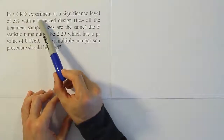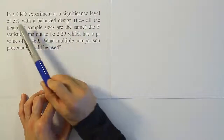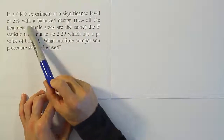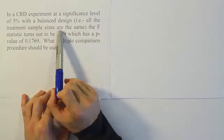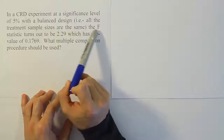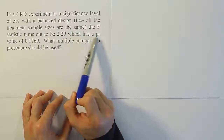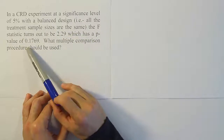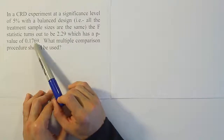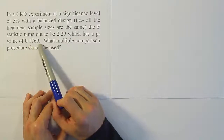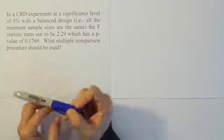In a completely randomized design experiment, at a significance level of 5% with a balanced design — i.e., all the treatment sample sizes are the same — the F-statistic turns out to be 2.29, which has a p-value of 0.1769, or 17.69%. The question is: while multiple comparison procedures should be used?